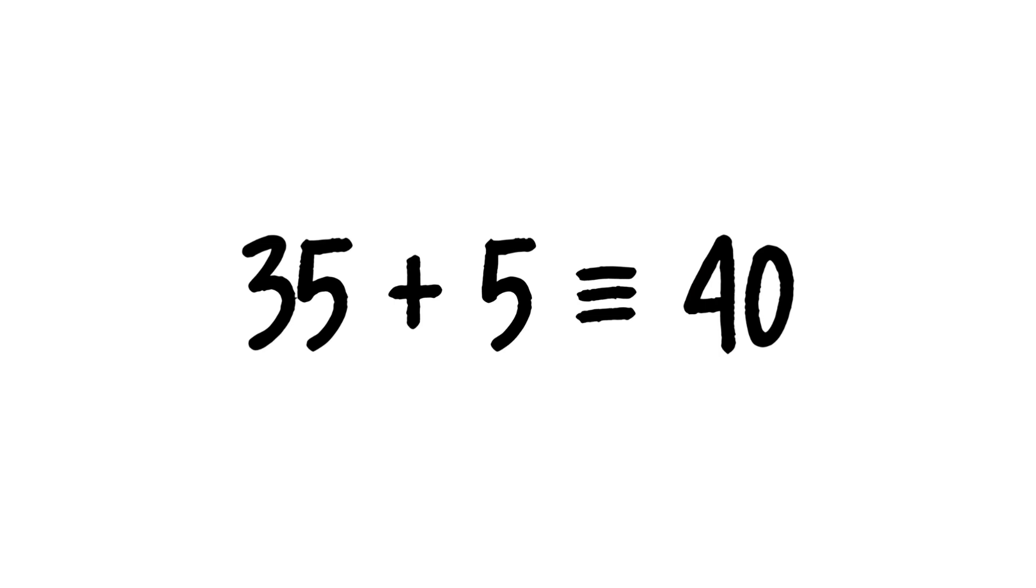Tens digits. Seven times five is thirty-five. Add the carried five: forty. Our final answer is four thousand and twenty-eight.